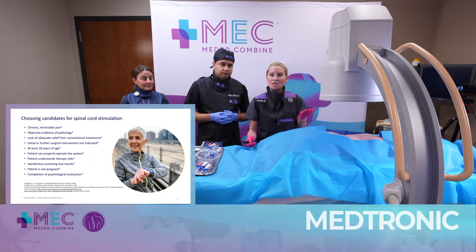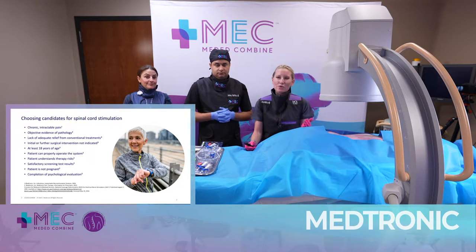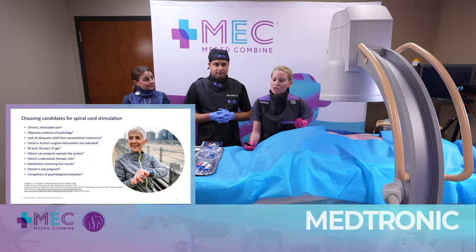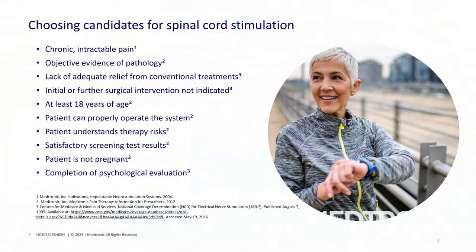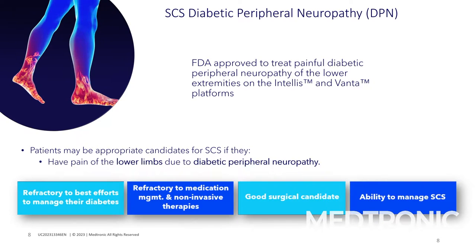How do you choose these candidates? These are people that have tried reasonable things — you've given them injections, they're just not lasting. You've tried different types of medications. Things are just not where the patient wants to be or where they're most functional. But you're not going to do it on someone that's pregnant or has coagulopathy. Really, you've got wide indications for your patient population.